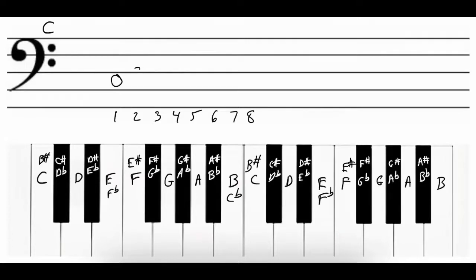The first note is C, the second note is D, the third note is E, the fourth note is F, the fifth note is G, the sixth note is A, the seventh note is B, and the last note is C.